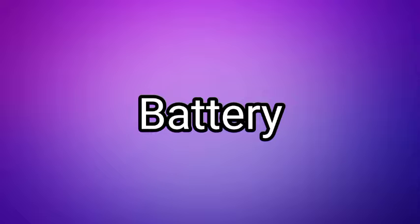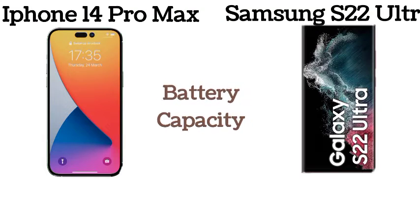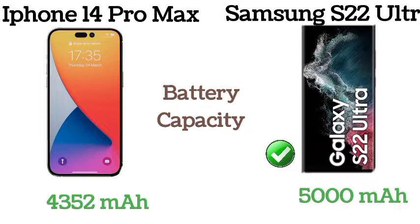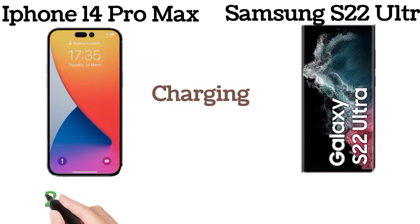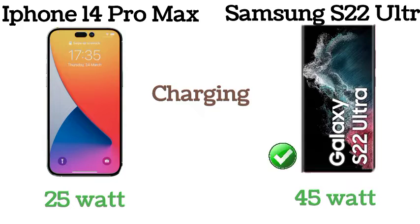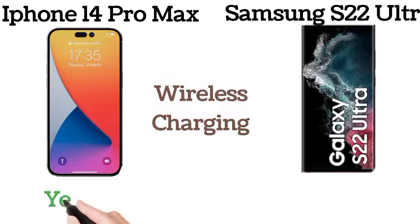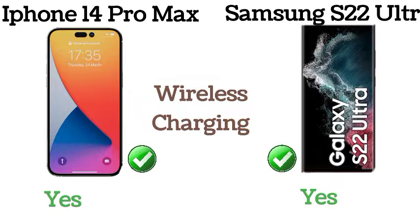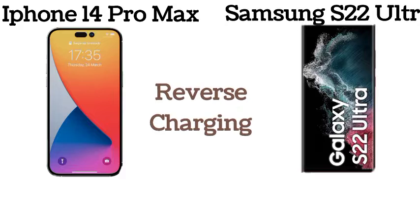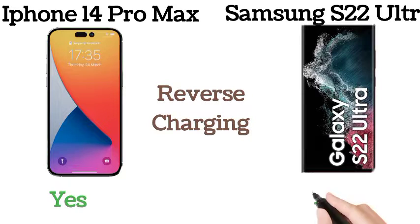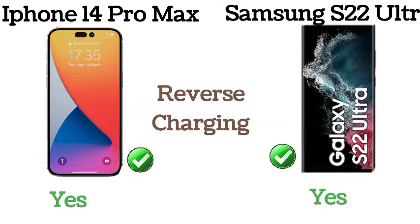Now for battery comparison: the battery capacity of the iPhone 14 Pro Max is 5352mAh and the S22 Ultra is 5000mAh. The iPhone 14 Pro Max has 25W charging and the S22 Ultra has 45W charging. Both phones support wireless charging and reverse charging.